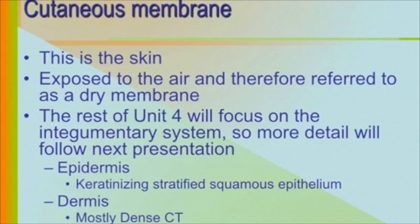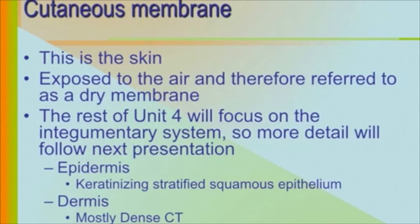The cutaneous membrane is the skin. Because it is exposed to the air, we refer to it as a dry membrane. The skin has two components: the most superficial is the epidermis, made of keratinizing stratified squamous epithelium — stratified meaning many layers, squamous cells being flat, designed for covering and protection. The deeper layer is the dermis, made mostly of dense connective tissue.